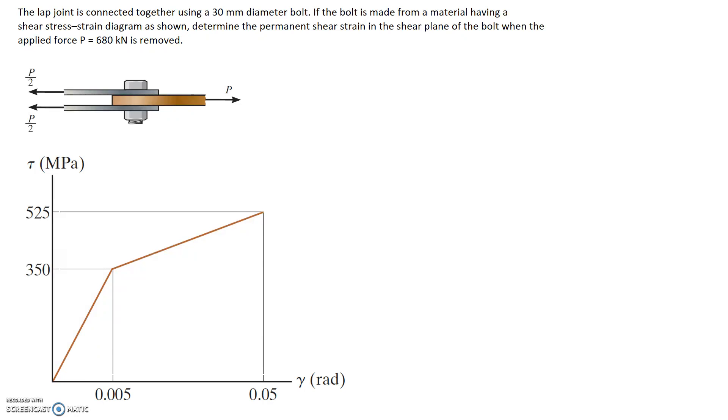So the lap joint is connected together using a 30 mm diameter bolt. If the bolt is made from a material having a shear stress strain diagram as shown, determine the permanent shear strain in the shear plane of the bolt when the applied force of 680 kN is removed.